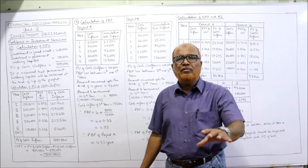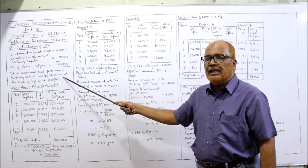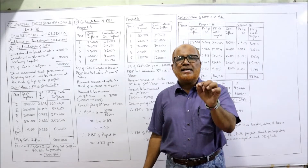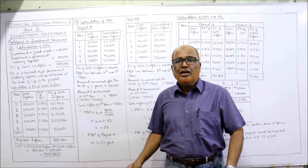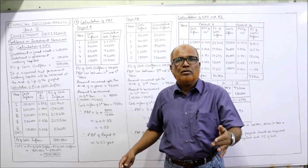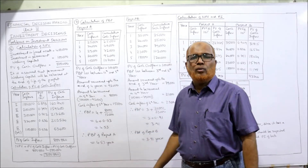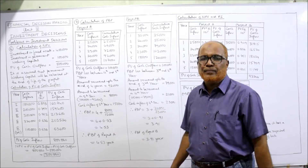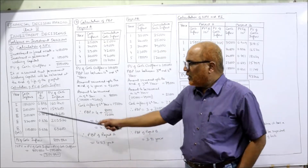It is assumed that permanent working capital will be released at the end of the life of the project. This assumption must be made every time permanent working capital is given; it will not be specified in the problem. So it will come in outflow and also in inflow, meaning at the end of the project we'll get back our money in permanent working capital. Now for the calculation of PV of cash inflow across years 1 to 4.